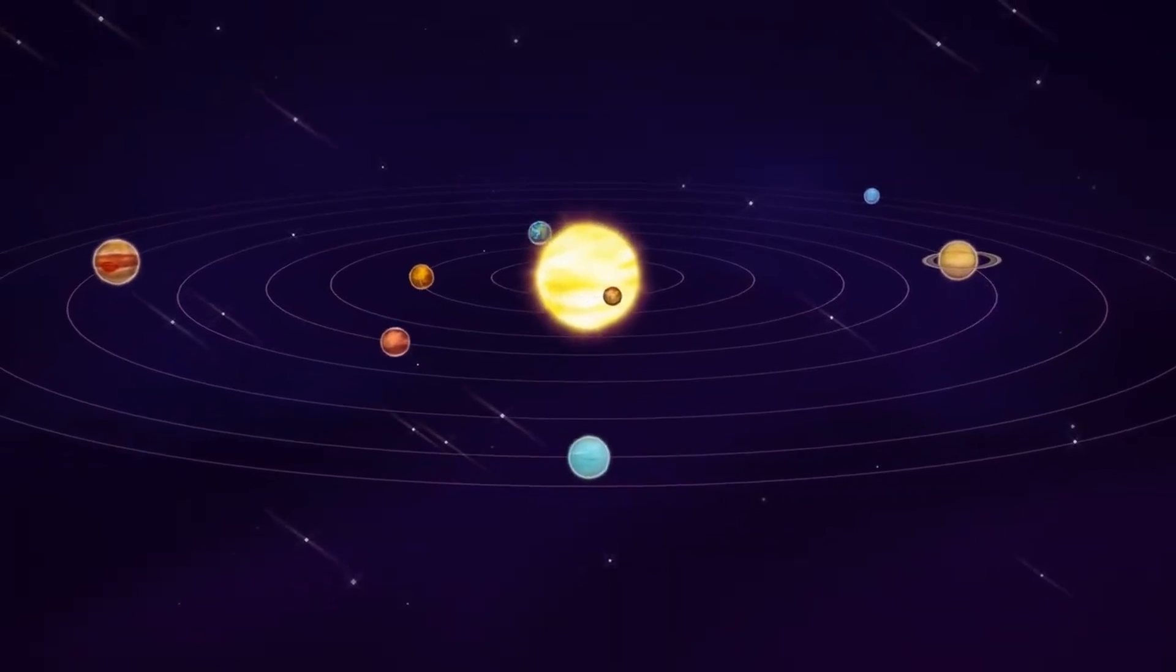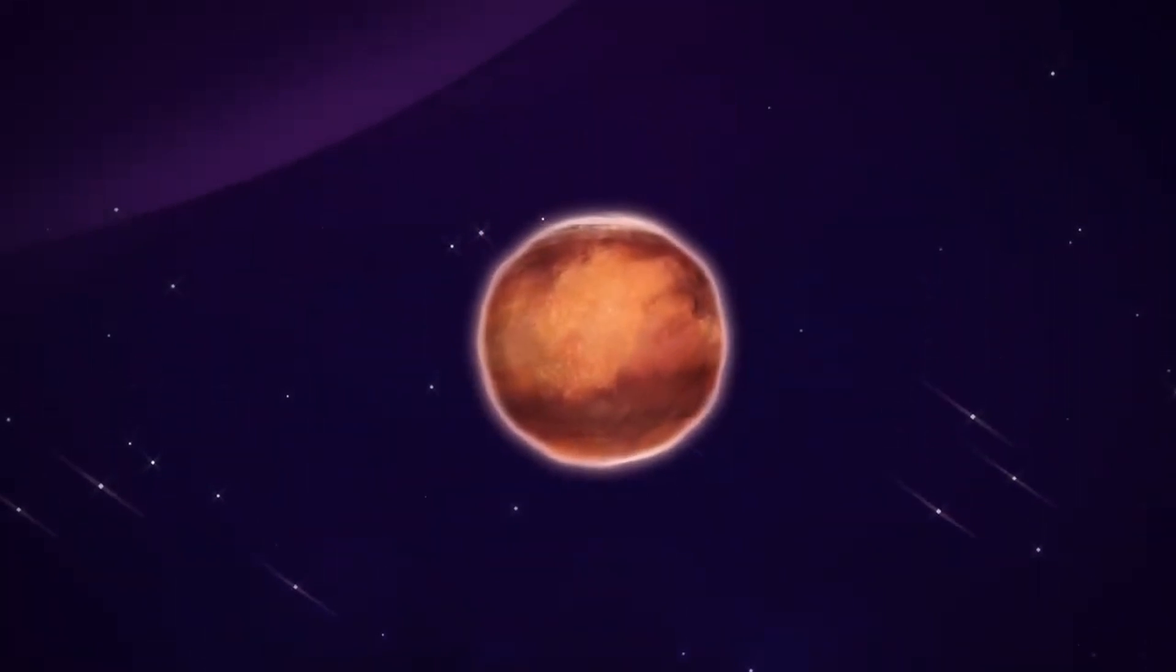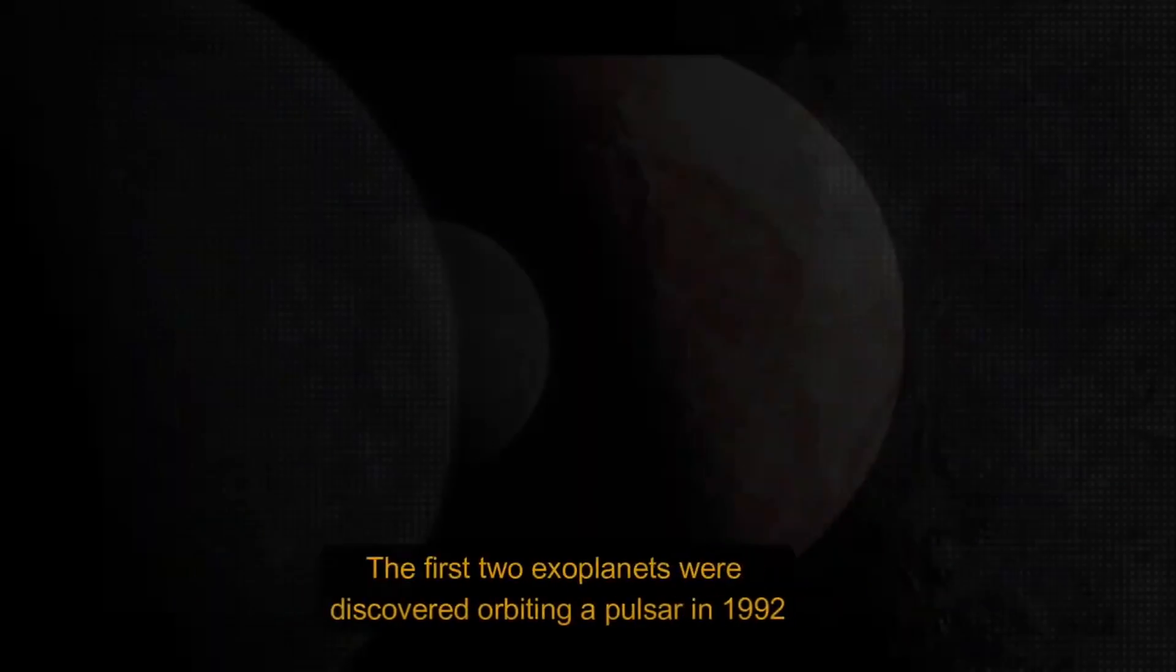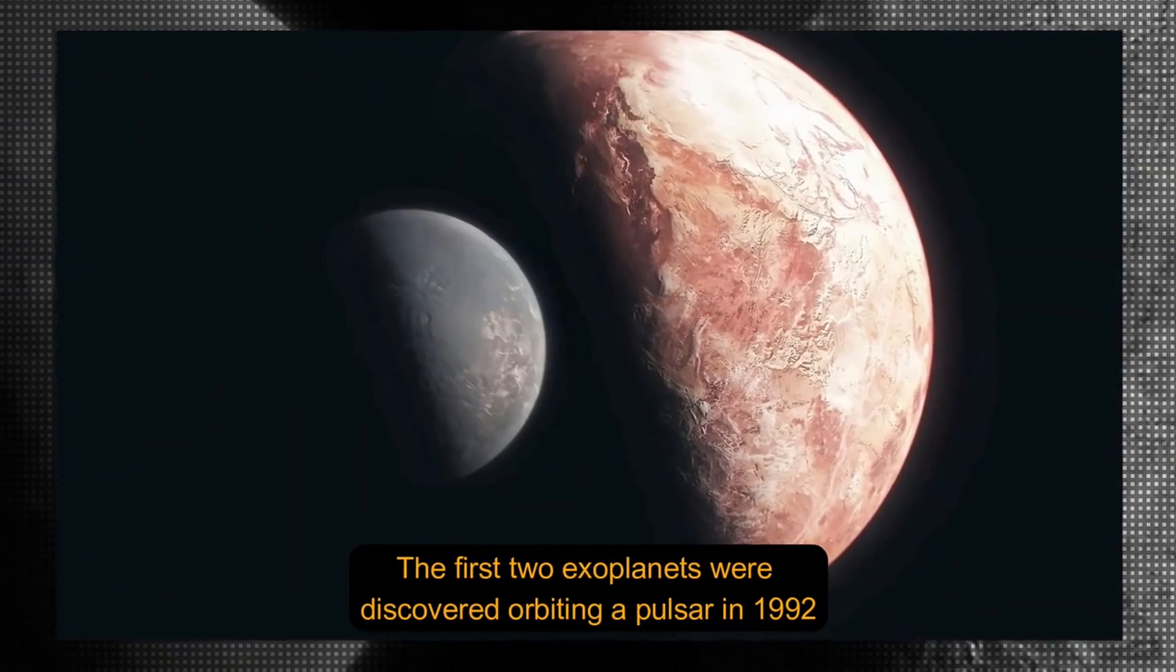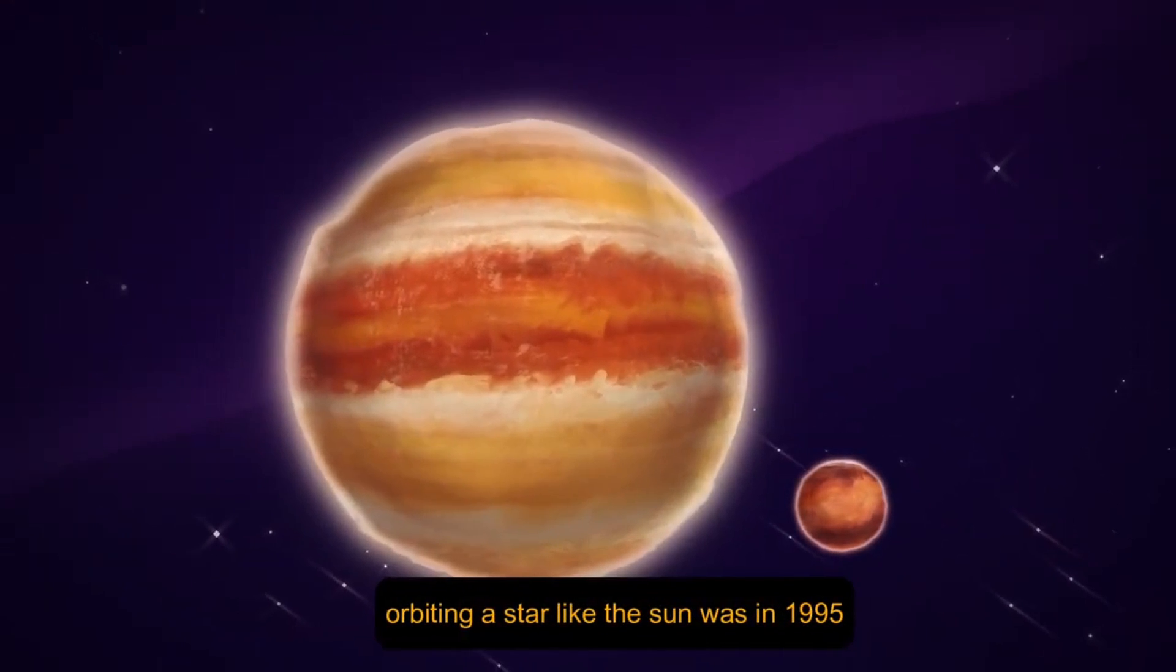Let's begin by understanding what exoplanets are. Planets that orbit stars other than our sun are known as exoplanets. The first two exoplanets were discovered orbiting a pulsar in 1992, and the first one confirmed to be orbiting a star like the sun was in 1995.